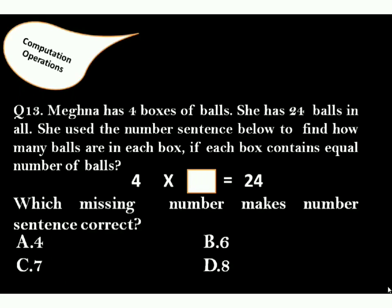Meghna has 4 boxes of balls. She has 24 balls in all. She used the number sentence below to find how many balls are in each box. If each box contains equal number of balls, which missing number makes number sentence correct? The correct answer is option B, because 4 into 6 equals 24.